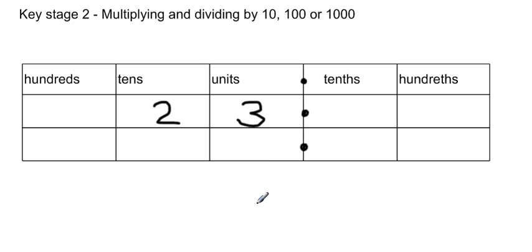If we're dividing 23 by 10, the digits just move one place to the right. So the tens go into the units, so we get two units. The units move into the tenths. So 23 divided by 10 would give you 2.3.